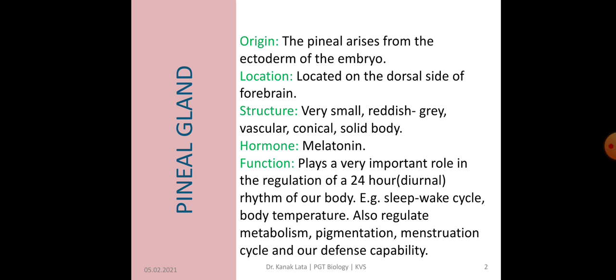First we will discuss about Pineal Gland. Pineal Gland originates from ectoderm of embryo and is located on the dorsal side of forebrain. It is very small, red-gray, vascular and conical solid body. The hormone secreted by Pineal Gland is Melatonin. Melatonin plays an important role in the regulation of a 24-hour, that is diurnal rhythm of our body.